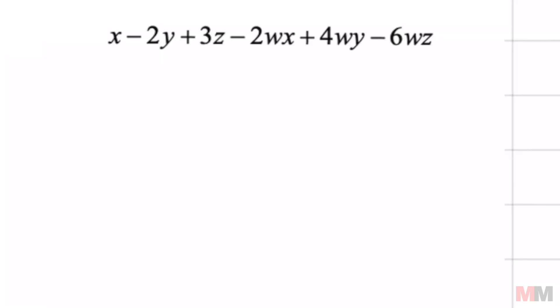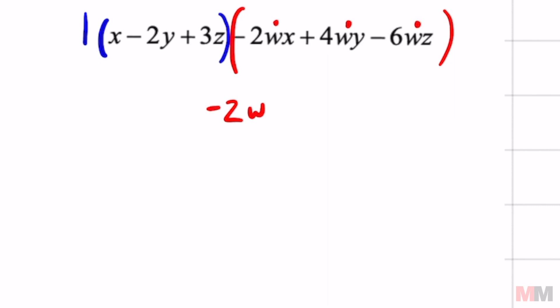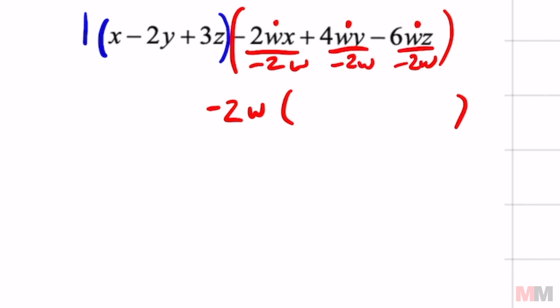In the first batch of parentheses (in blue), like the second question, they don't have a greatest common factor nor a common variable, so we take out a 1. In the second batch (the red batch), since the leading coefficient is negative, take out a negative — I'm taking out a negative 2. They all have a w, so you can also take that out of the parentheses. Divide each one by negative 2w: that gives x inside, then 4 divided by negative 2 is negative 2y. Check it out — and the last one is 3z.